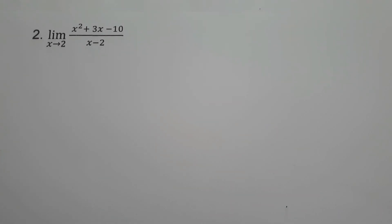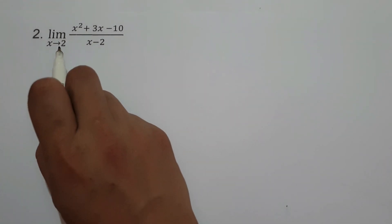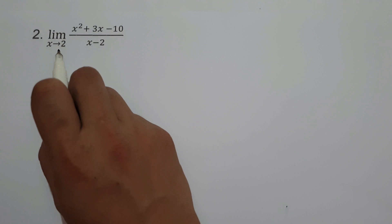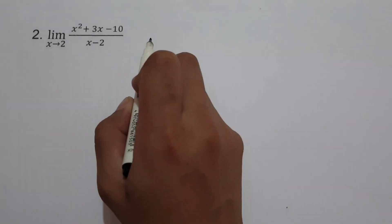On example number 2, we have the limit of x squared plus 3x minus 10 all over x minus 2 as x approaches 2. If we use direct substitution, we get 0 over 0, which is indeterminate.